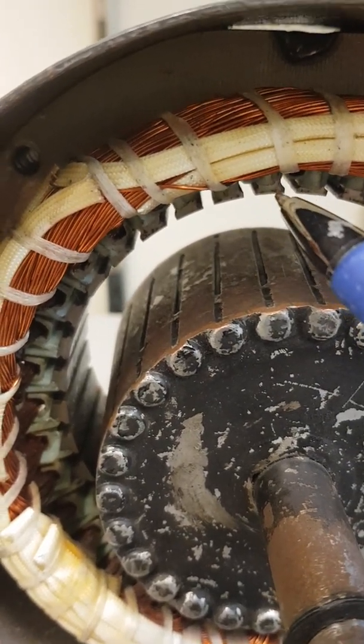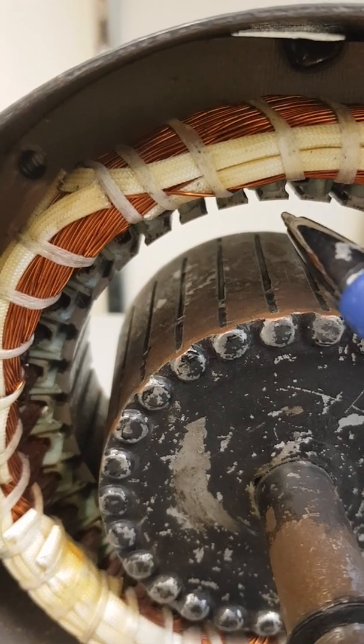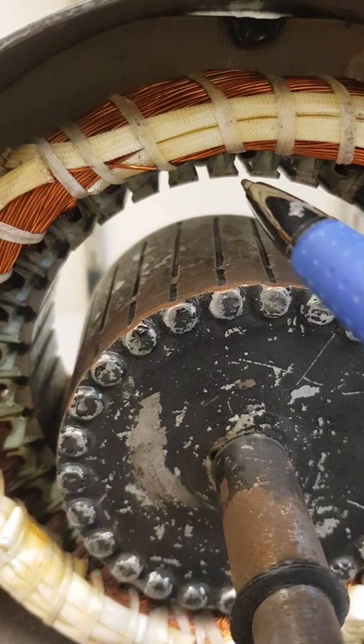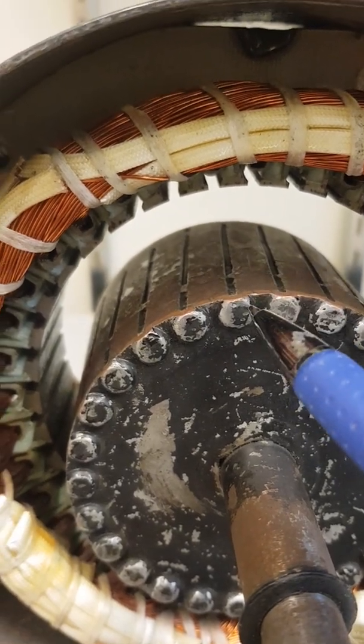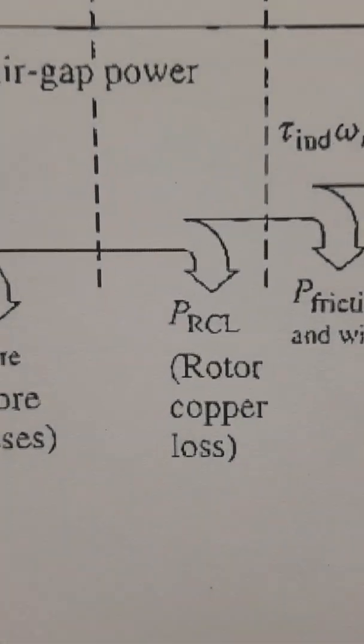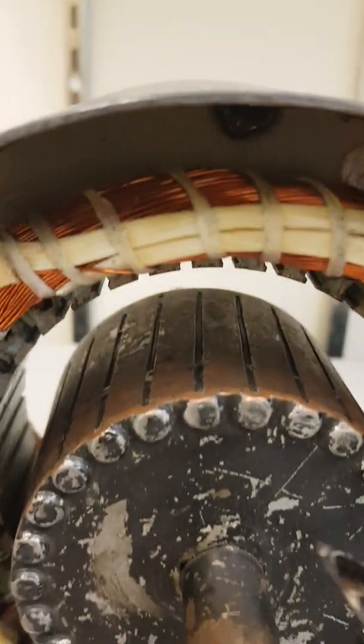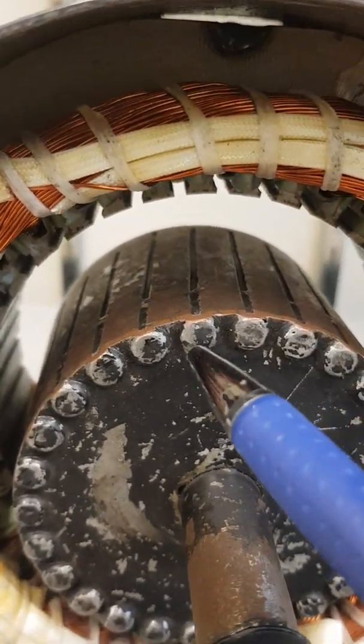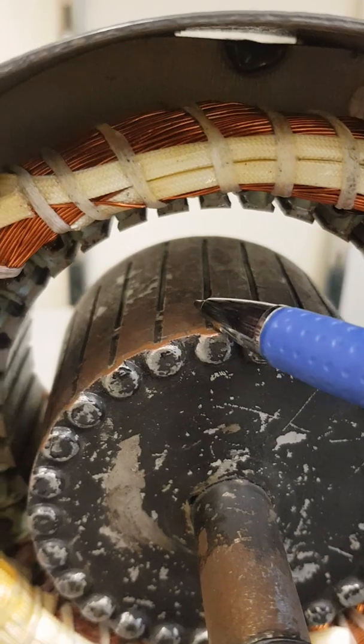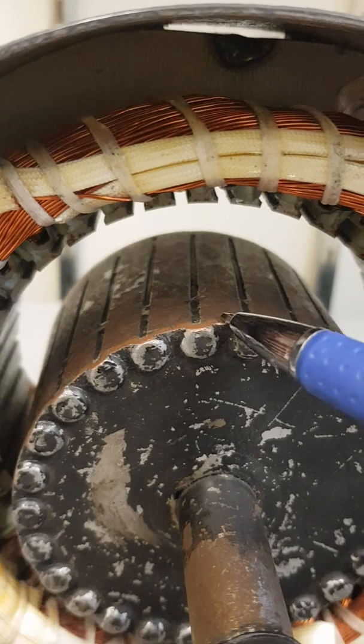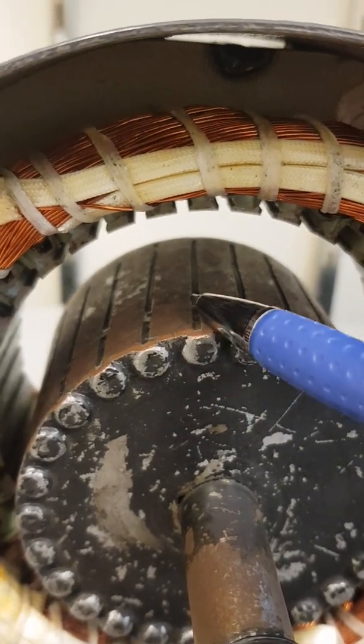After that, we will have the rotor copper loss because the rotor basically has rods short-circuited from both sides—copper rods. We will have a current that goes through these rods, induced current because of the rotating magnetic field. This current will produce the rotor copper loss.